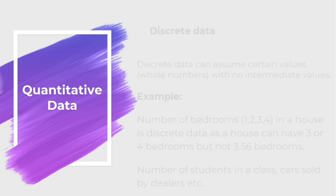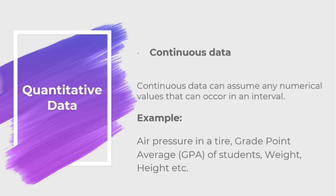Whereas continuous data can assume any numerical value that can occur in an interval. For example, air pressure in a tire can take any value in a given interval. Similarly, your GPA, weight, height, etc. are different examples of continuous data.